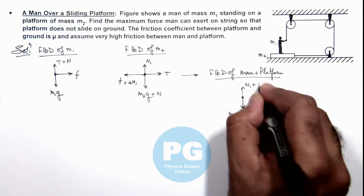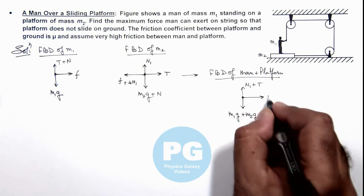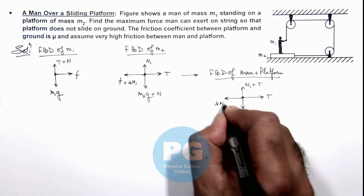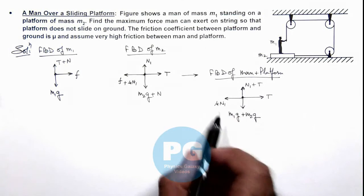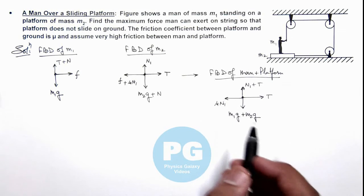Toward the right it is T, and toward the left it is μN1. The normal reaction N1 will cause the friction on the ground, which is μN1 at the limiting value.